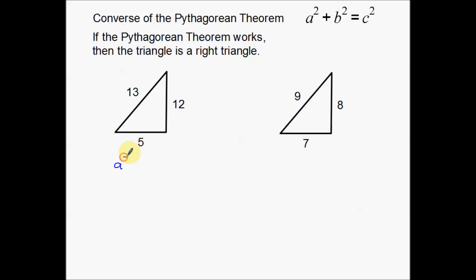So 12 and 5 are going to go in for the legs here, and then my 13 is going to go in for my hypotenuse. So a squared plus b squared equals c squared, which means 5 squared plus 12 squared, is that going to be equal to 13 squared? Now notice I put a little question mark there, because that's the question we're asking. Is this going to work? Because we don't know right off the top of our heads.